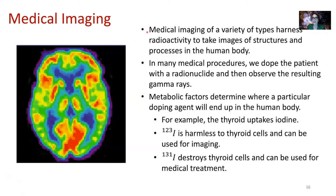Medical imaging of many different types harnesses radioactivity to take images of structures and processes in our human body. Here's a medical image of a brain taken using a radioactive technique. In many medical procedures, the doctor or technician will dope the patient with a radionuclide and then observe the resulting gamma rays.